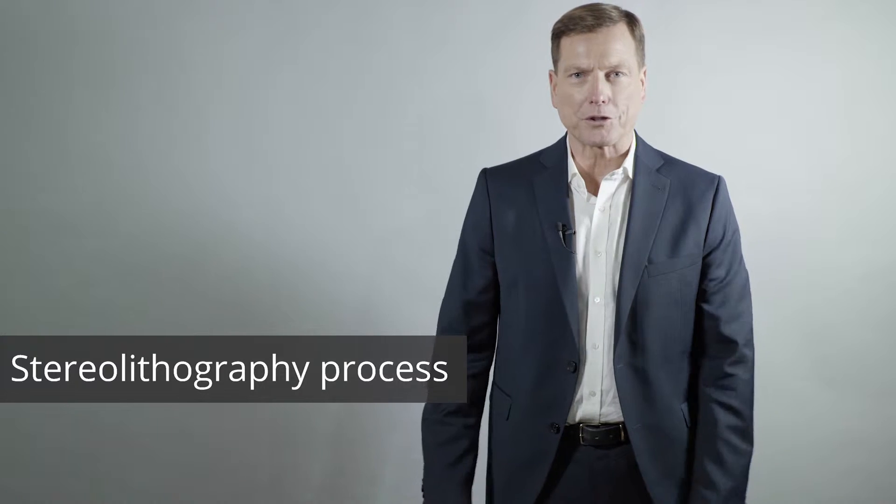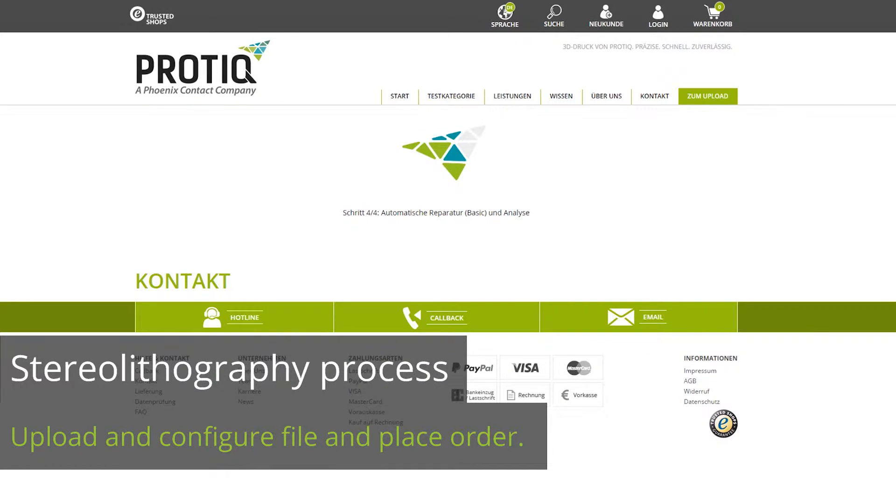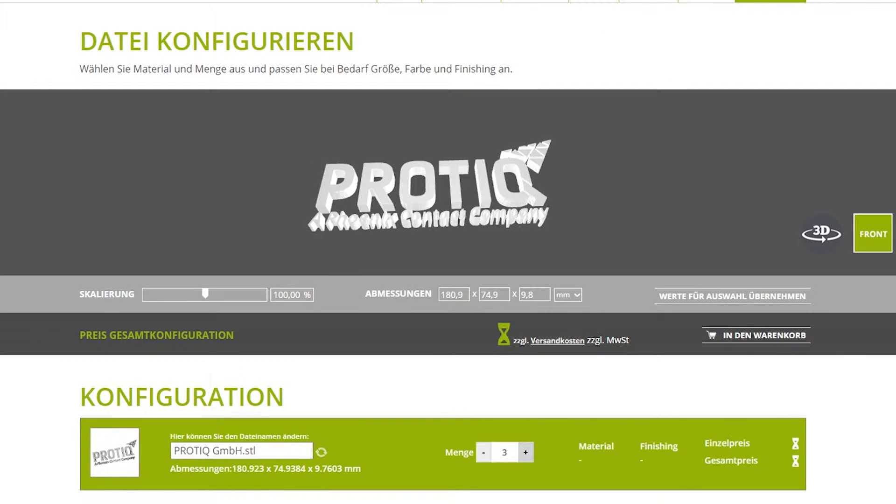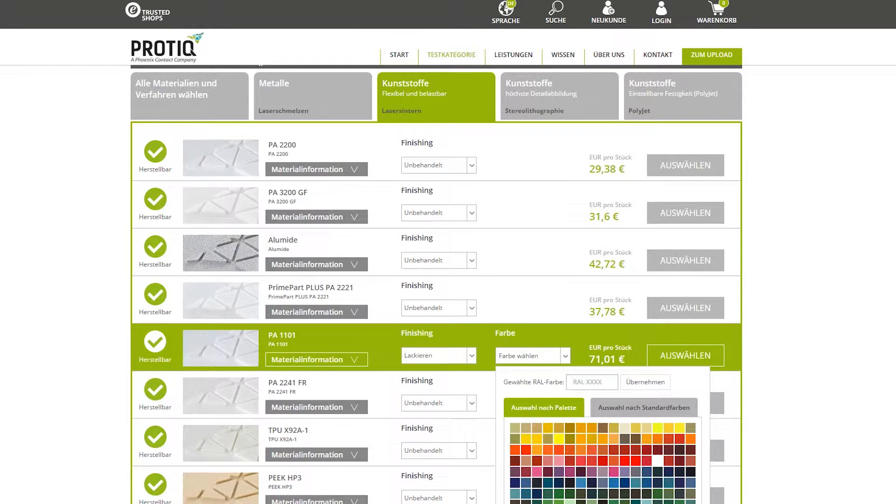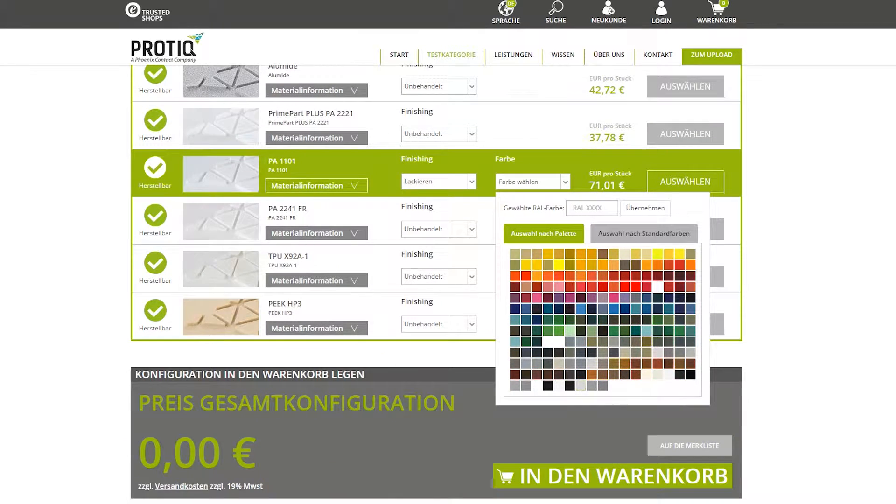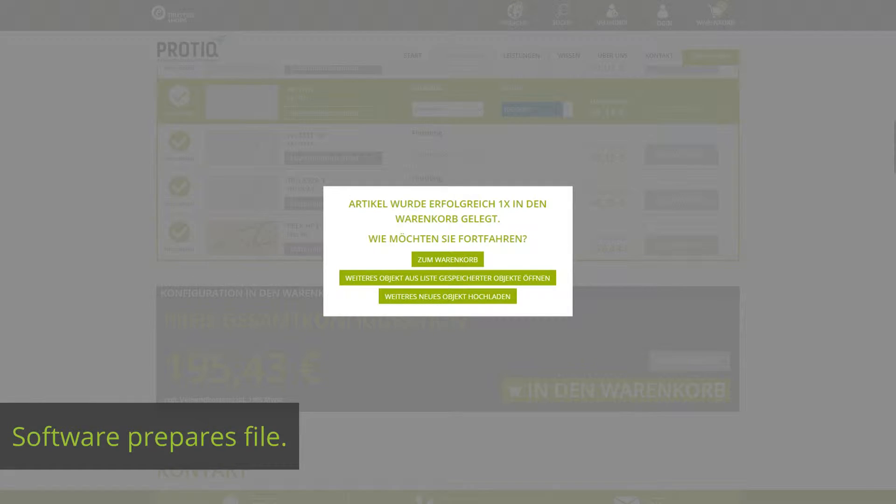Here's how the ProTIC process works. Upload your file to the ProTIC portal and choose the quantity, material, and finish. Our software divides your file into layers and sends them to the printer.